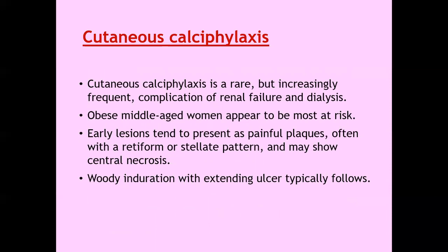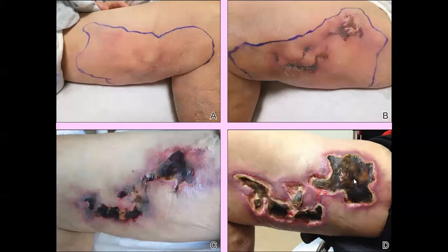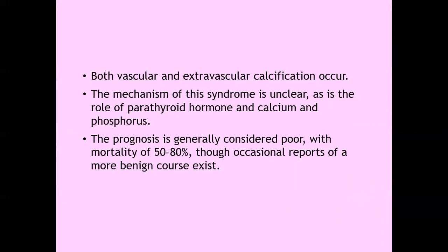Cutaneous calciphylaxis is a rare but increasingly frequent complication of renal failure and dialysis. Patients are usually obese, middle-aged women. Early lesions tend to present as painful plaques, often with a retiform or stellate pattern, and may show central necrosis. Woody induration with extending ulcer typically follows. Both vascular and extra-vascular calcification occur. The mechanism is unclear, as is the role of parathyroid hormone, calcium, and phosphorus. Prognosis is generally poor, with mortality of 50 to 80 percent, though occasional reports of a more benign course exist.